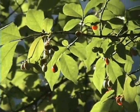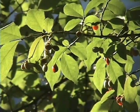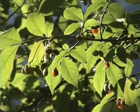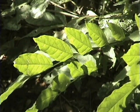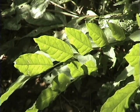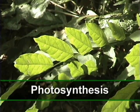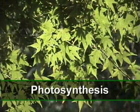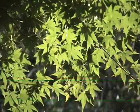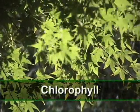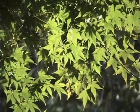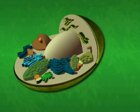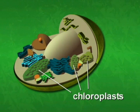Where do plants get the food molecules that are used in cellular respiration? The glucose for cellular respiration in green plants is produced in a process called photosynthesis. Photosynthesis can only take place in the presence of chlorophyll. Chlorophyll is what gives leaves their green color, and it occurs in structures called chloroplasts within plant cells.